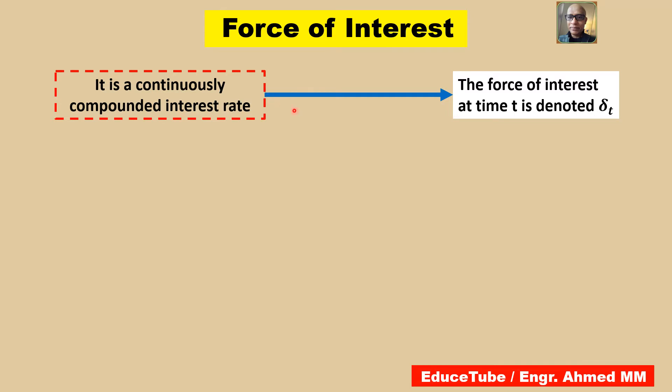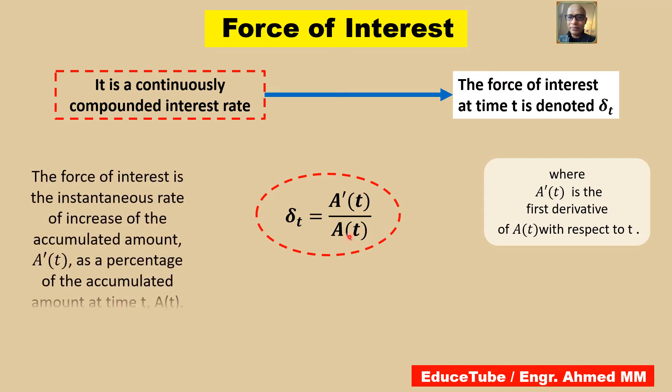It is a continuously compounded interest rate. This force of interest at time t is denoted by δ_t. This δ_t is the ratio of A'(t) by A(t), where A'(t) is the first derivative of A(t) with respect to t.